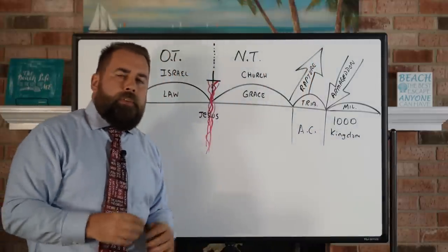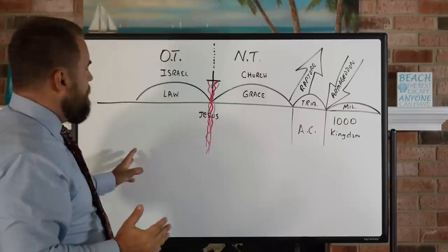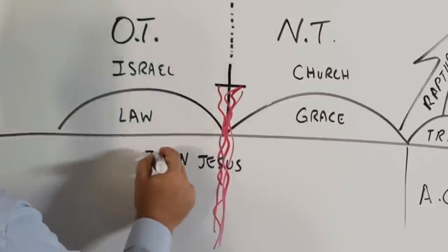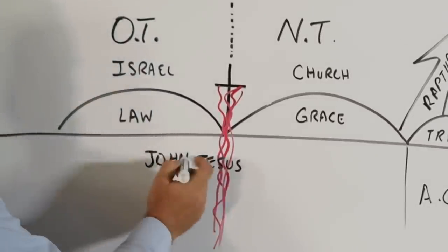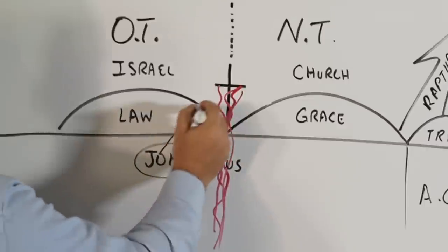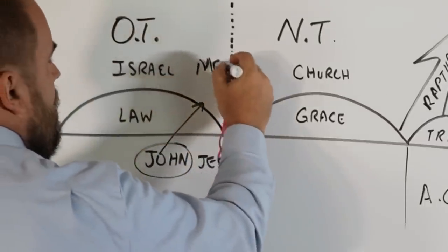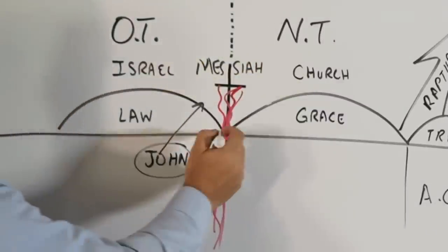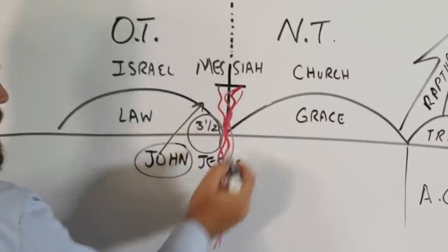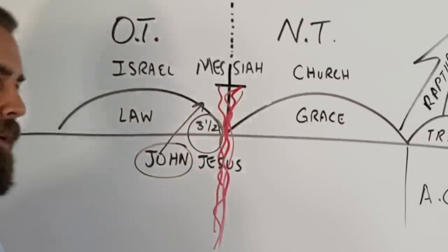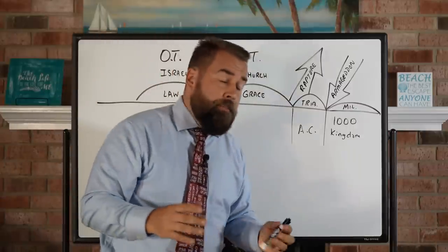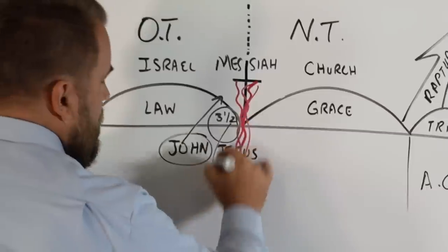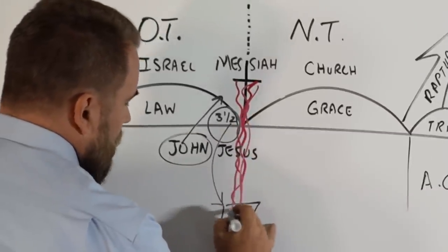Have you ever thought about these basic divisions? There was a guy named John who showed up, and the Bible says the law and the prophets were to John. John showed up baptizing the people of Israel, pointing them to the Messiah — saying, 'Your Messiah is showing up.' Then Jesus did His earthly ministry for three and a half years, and Jesus' earthly ministry was to the Jews. Jesus Christ said, 'I came only to the lost sheep of the house of Israel.' Then we see His death, burial, and resurrection.